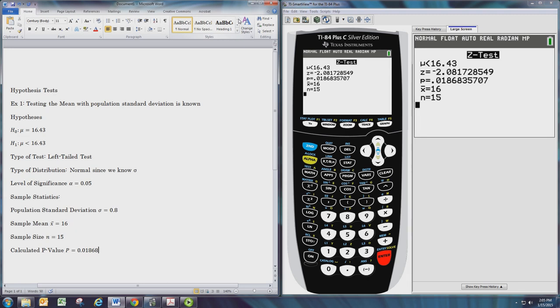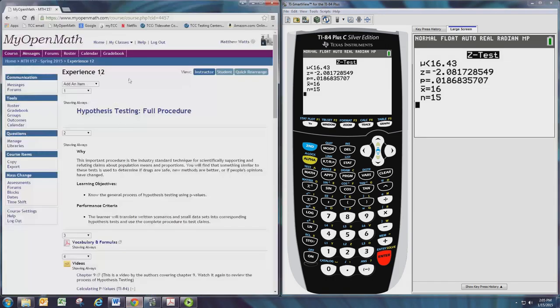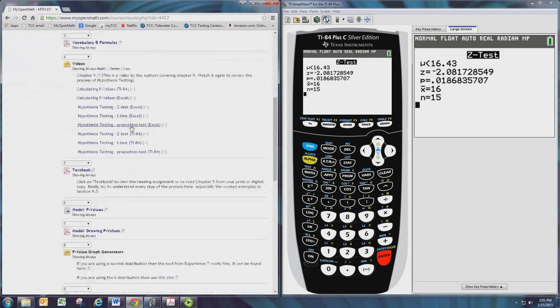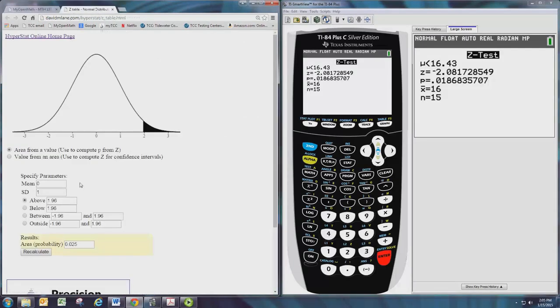Now we want to get a picture of this. From the main page of experience 12, we have the p-value graph generators. For the normal distribution, use the first link.